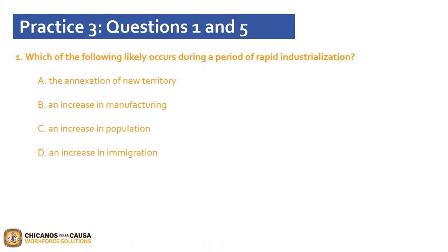Let's answer question 1: which of the following likely occurs during a period of rapid industrialization? A. The annexation of new territory. B. An increase in manufacturing. C. An increase in population. D. An increase in immigration. Industrialization is related to increased manufacturing — they go together. The first two paragraphs also imply an increase in manufacturing. Therefore, the answer is B: an increase in manufacturing.